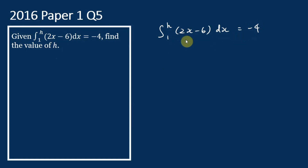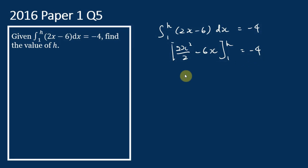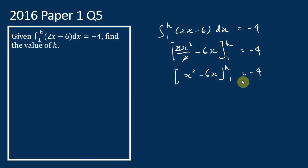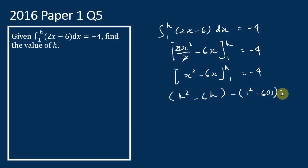When we integrate x it becomes x squared, so 2x squared over 2 minus 6x — this is the definite integral from 1 to h, equals negative 4. Simplifying, it becomes x squared minus 6x evaluated from 1 to h equals negative 4. Substituting h: h squared minus 6h, then minus substituting 1: 1 squared minus 6 times 1, equals negative 4. So h squared minus 6h minus 1 minus 6 equals negative 4.